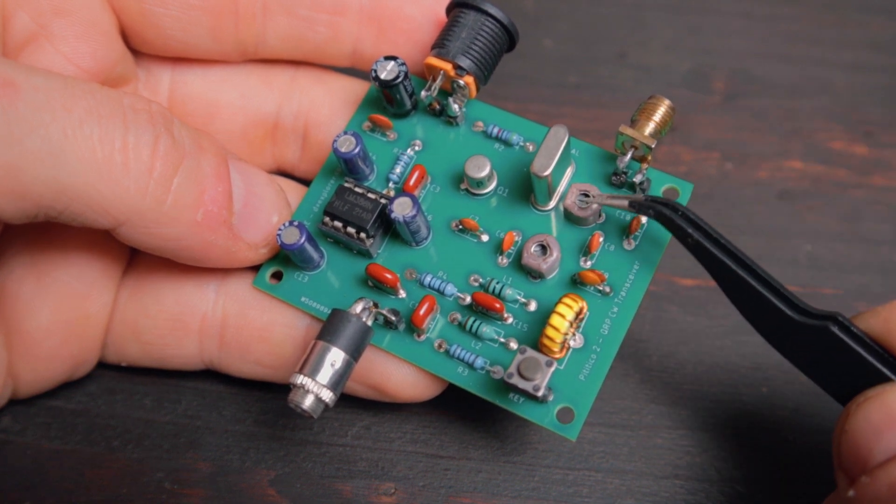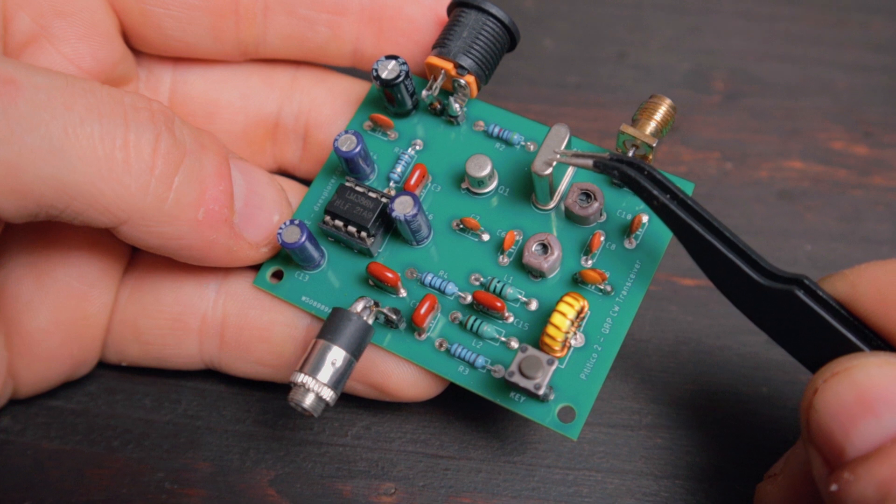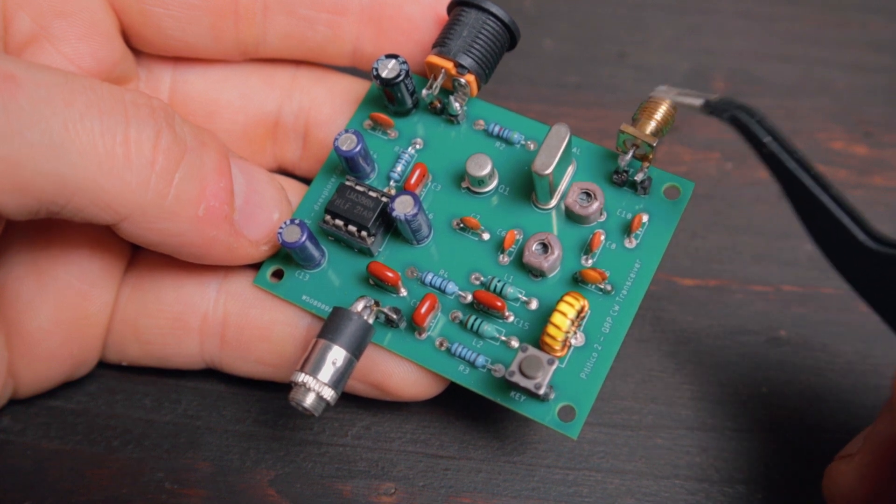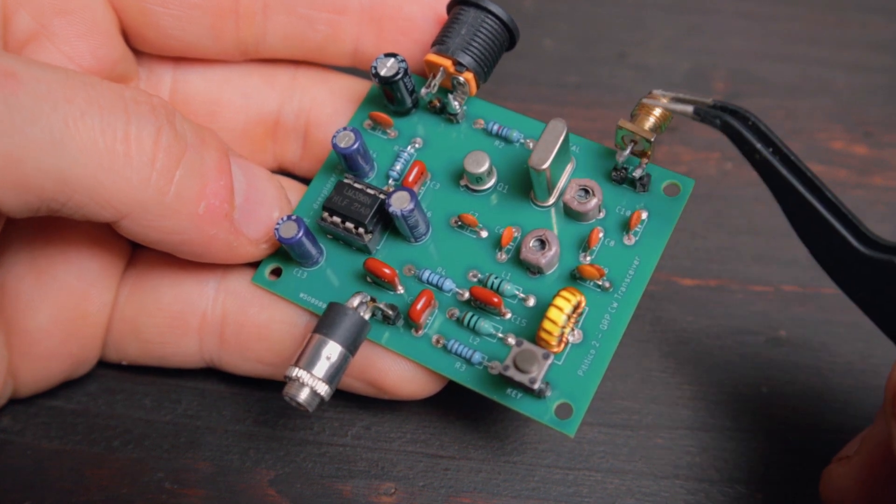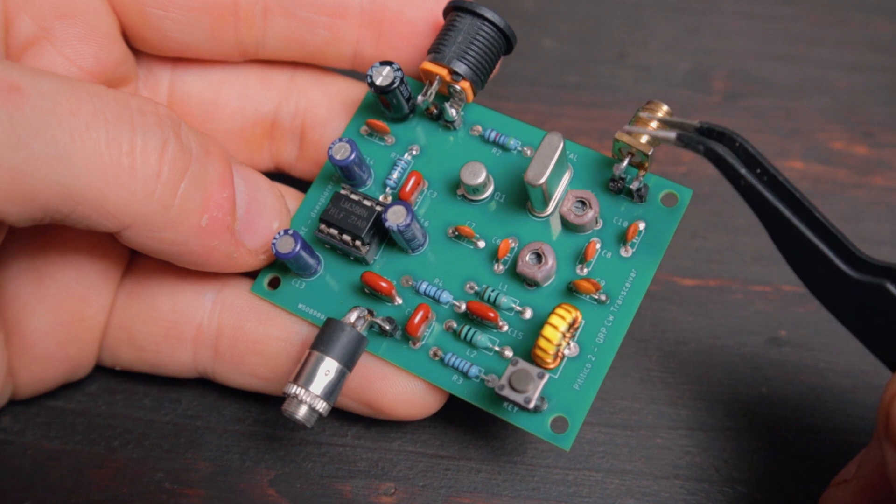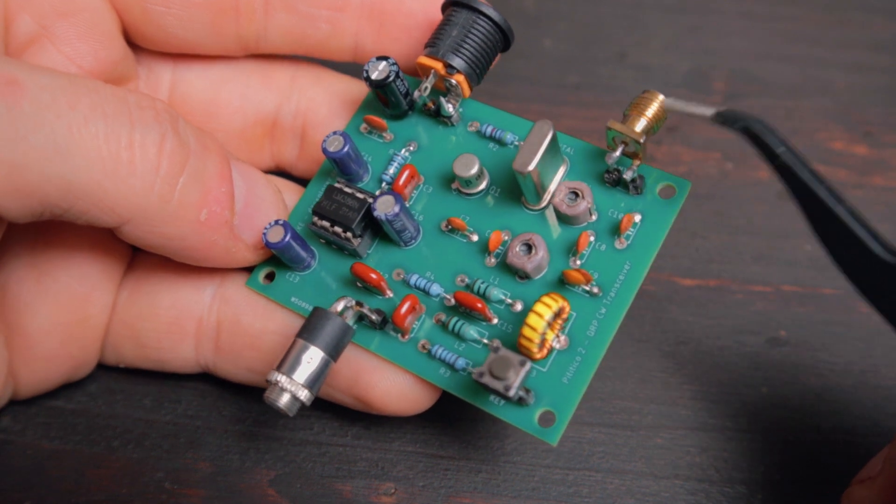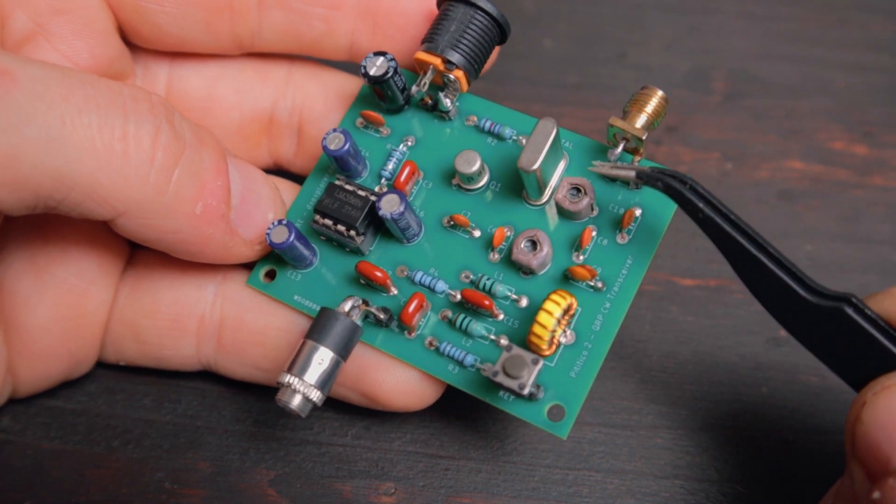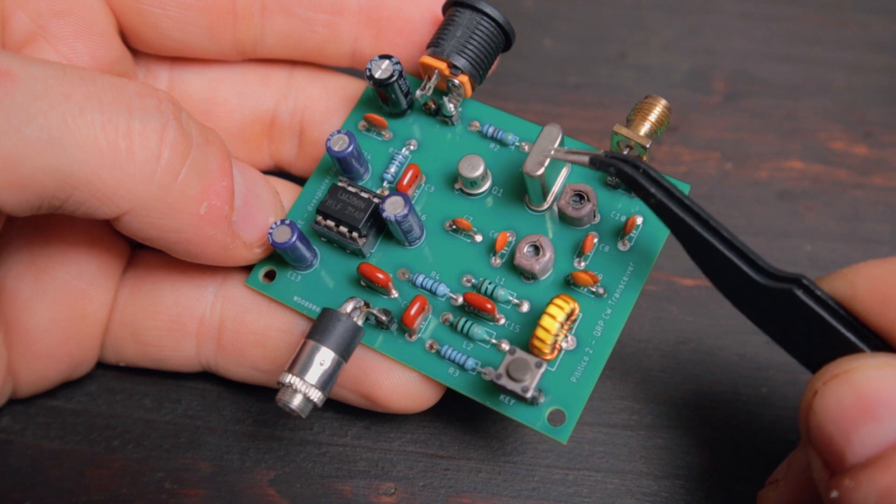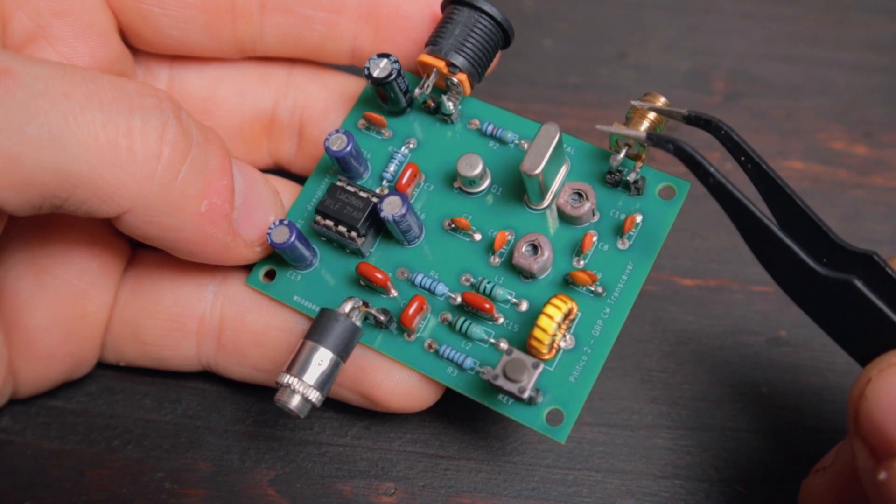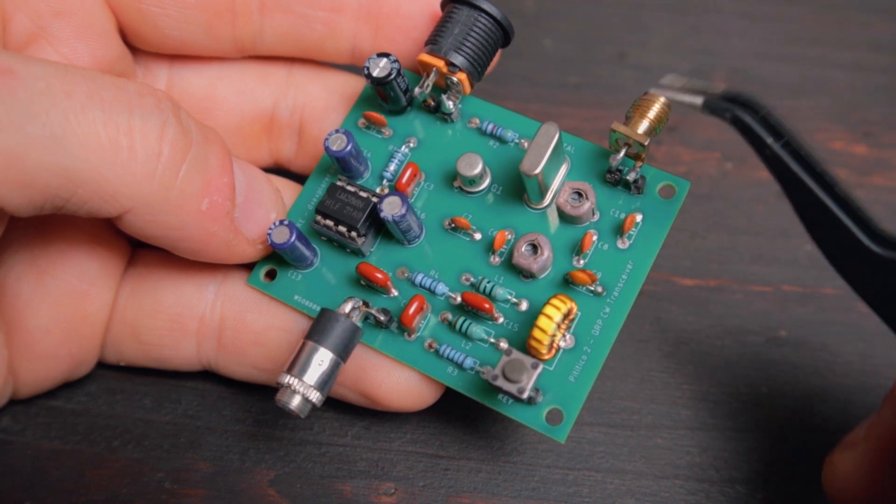Now I ran into a couple of issues. I no longer had the right value trimmer capacitor, so I just put whatever I had. But for that reason I couldn't manage to get it to transmit on 7.020 because I'm using a 7.020 crystal. I ran out of 7.030 crystals, so right now it's transmitting somewhere around 7.019195.